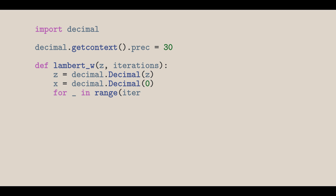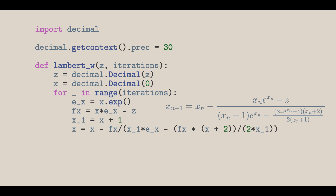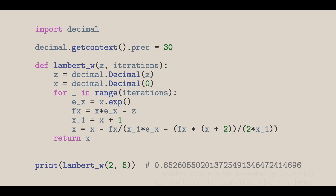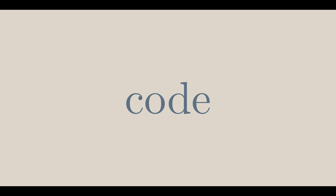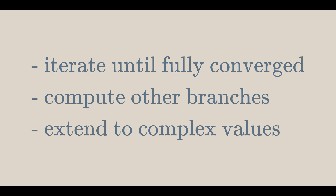Let's implement this in Python. First, let's have the same setup as Newton's method. This time, we should have a variable for f of x and x plus 1, because they occur twice — this prevents computing the same thing twice. Then do the main computation and return x. The same things from our other code can be applied: iterate until fully converged, compute other branches by setting the initial guess closer to another branch, and extend to complex values if a complex arithmetic method is used instead.